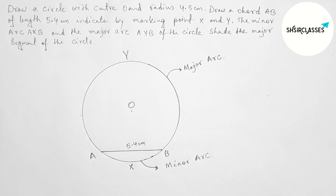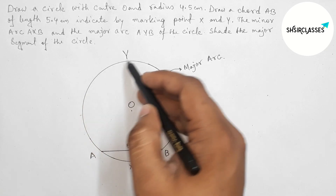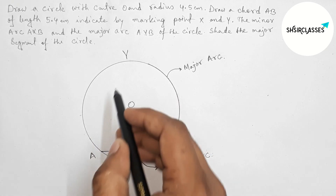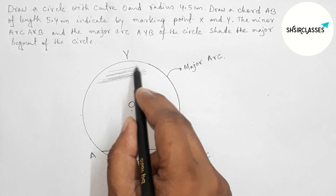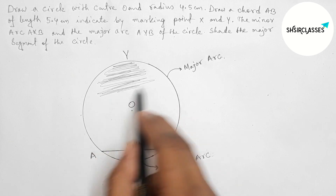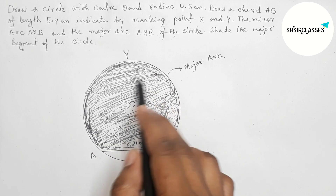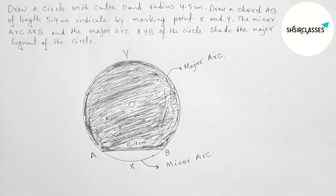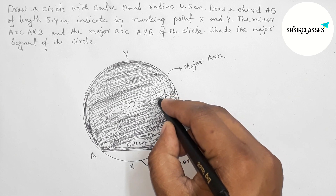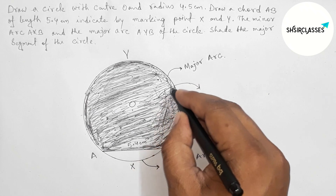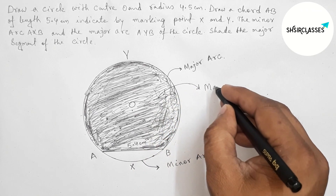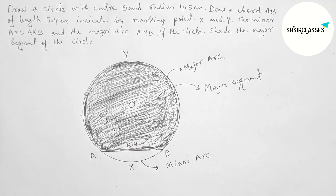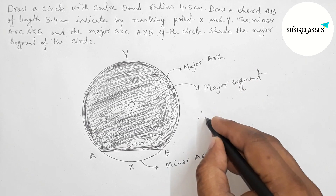Next, identifying the major segment of the circle. AYBA — this is the major segment of the circle. This region bounded by the major arc AYB and chord AB forms the major segment of the circle.